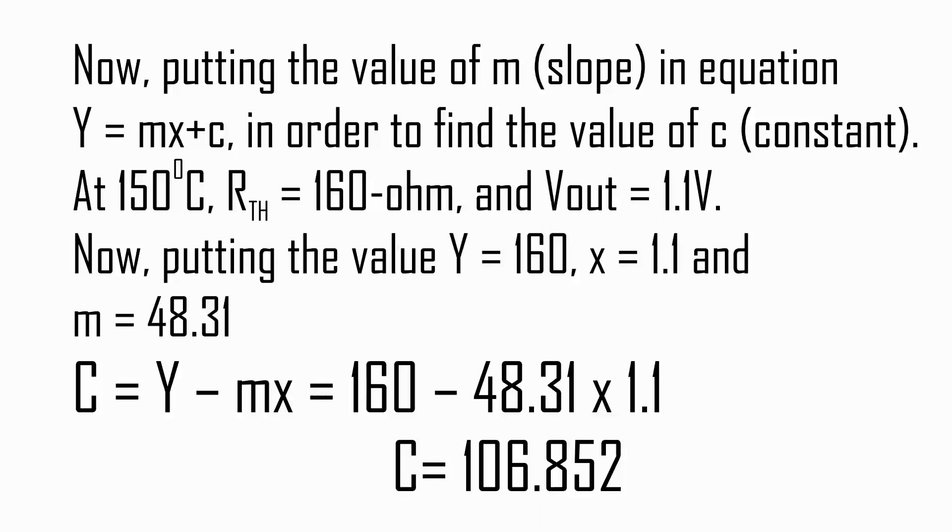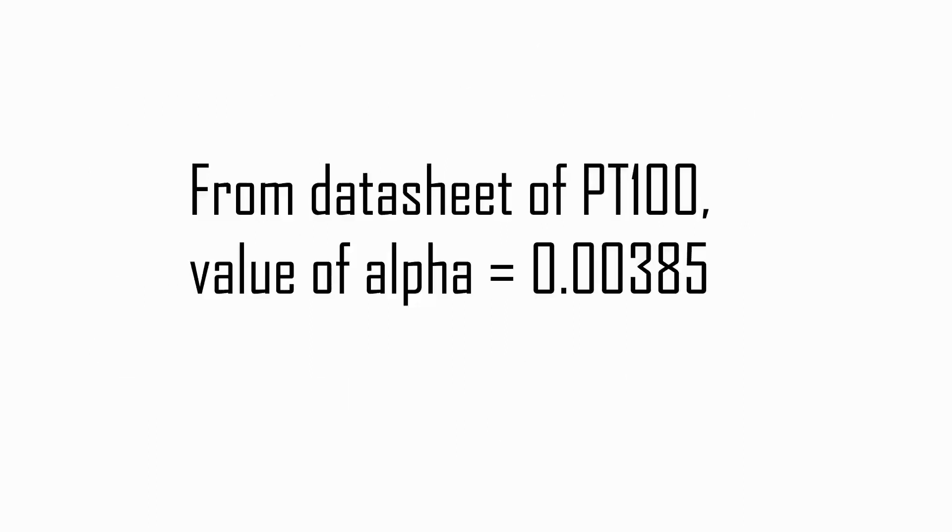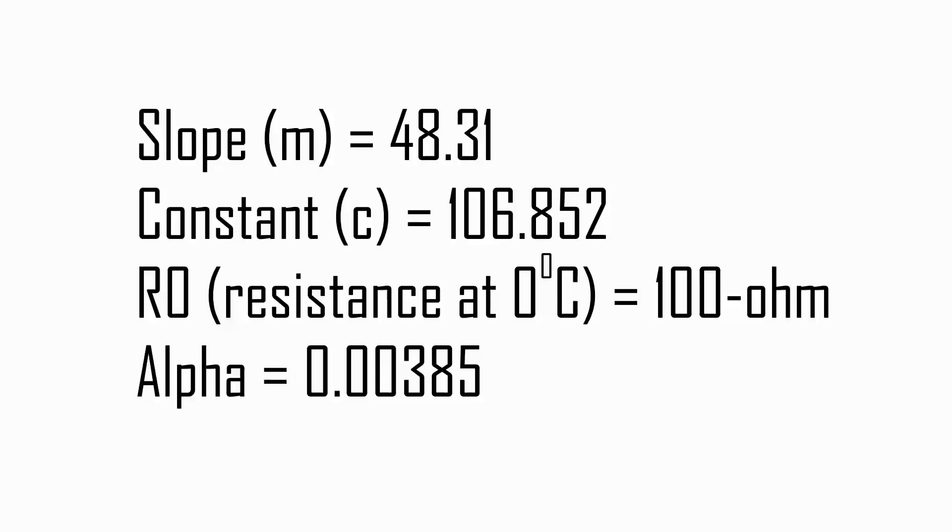Now by putting the value of m (slope) in equation y equals mx plus c, we get the value of constant. At 150 degrees Celsius, resistance equals 160 ohm and Vout equals 1.1 volt. Therefore constant can be calculated as 106.852. We also need the value of alpha. From the datasheet we get alpha equals 0.00385. So from above calculations: slope equals 48.31, constant c equals 106.852, resistance at 0 degrees Celsius equals 100 ohm, and alpha equals 0.00385.